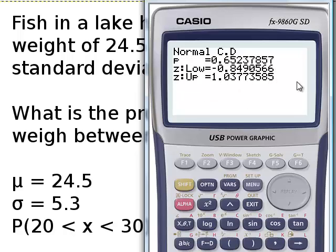And our probability is 0.65... The lower bound, that's 20, is 0.849 standard deviations below the mean. The other one is above. But again, that doesn't particularly matter. What matters is it's 65.23%.